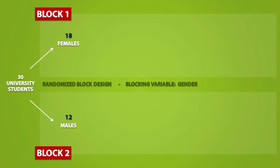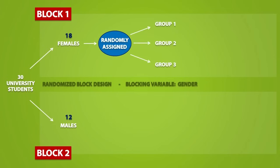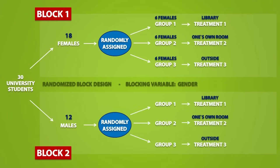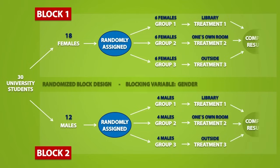The females will be randomly assigned to three different groups, and each group will have 6 females, with each group receiving different treatments. For the males, we do the same thing — since there are 12 males, we randomly assign 4 males into each group. At the end of the experiment, we will compare the results within each block.